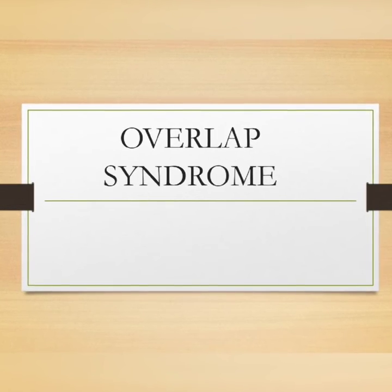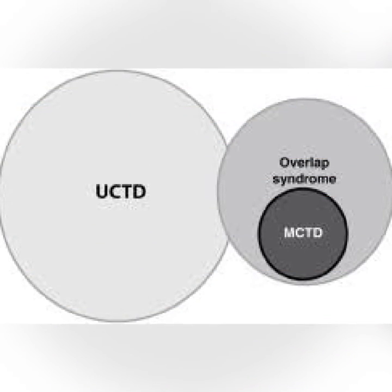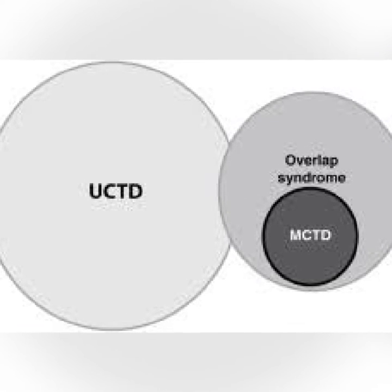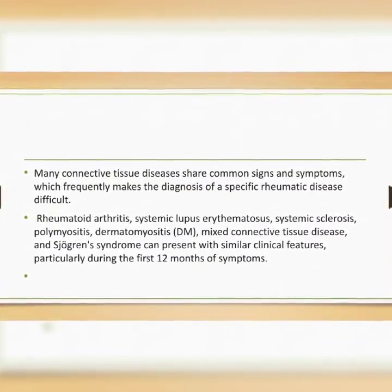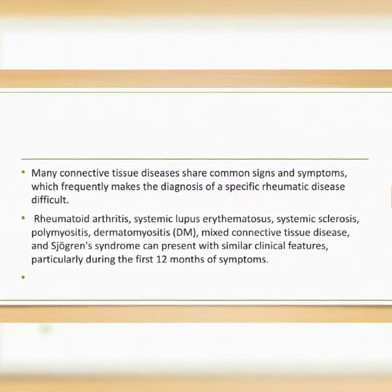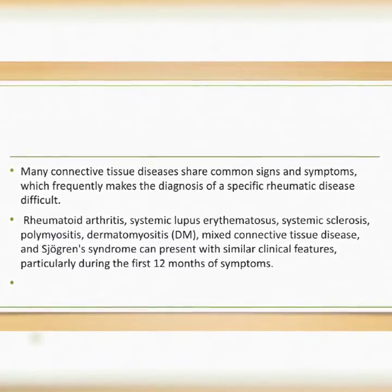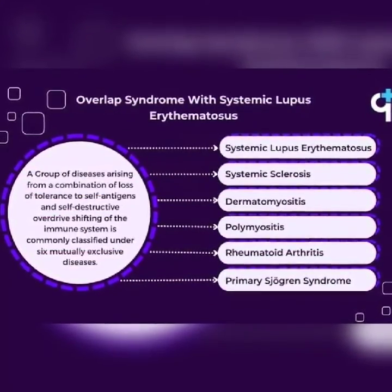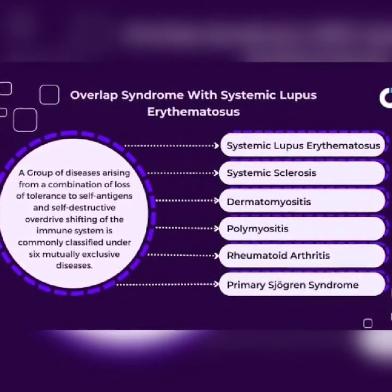First, we discuss Overlap Syndrome. Many connective tissue diseases share common signs and symptoms, which frequently makes the diagnosis of a specific rheumatic disease difficult. Rheumatoid arthritis, systemic lupus erythematosus, systemic sclerosis, polymyositis, dermatomyositis, mixed connective tissue disease, and Sjogren's syndrome can present with similar clinical features, particularly during the first 12 months of symptoms.